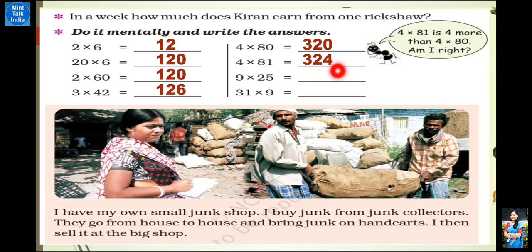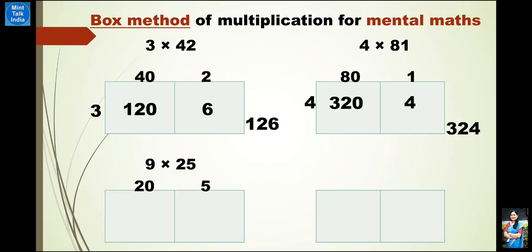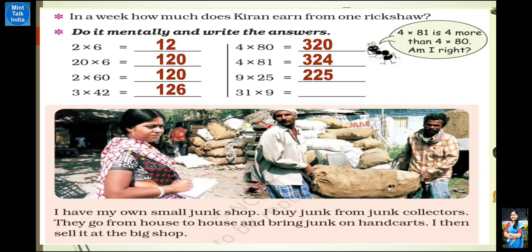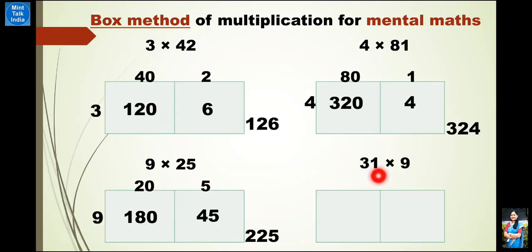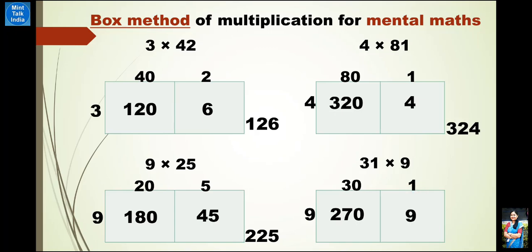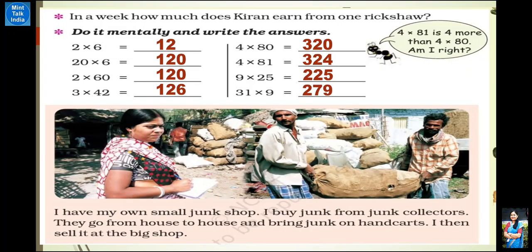Next multiplication: 9 multiplied by 25. Expand 25 as 20 plus 5, side me likhenge 9. Now multiply 20 with 9 — 9 × 2 = 18, aur side me ek 0 = 180. Aur 9 × 5 = 45. 180 mein 45 add karne ke baad milega 225. So the answer is 225. And the last: 31 multiply by 9. Expand 31 into 30 and 1. Side me likhenge 9. 30 × 9 = 27, aur side me 0 = 270. Aur 9 × 1 = 9. 270 plus 9 is 279. Answer is 279.